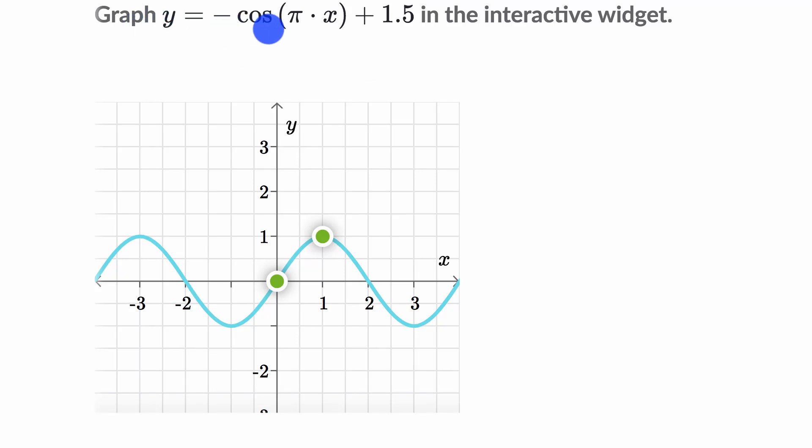We're told to graph y equals negative cosine of pi times x plus 1.5 in the interactive widget. So pause this video and think about how you would do that.